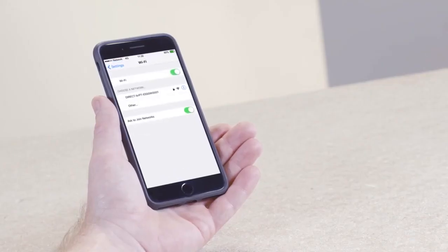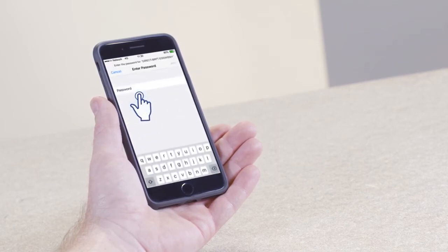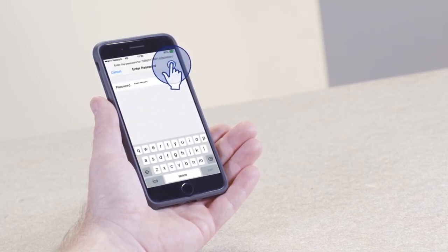Next, open your Wi-Fi selection on your mobile device and select the printer name. Enter the password and connect.